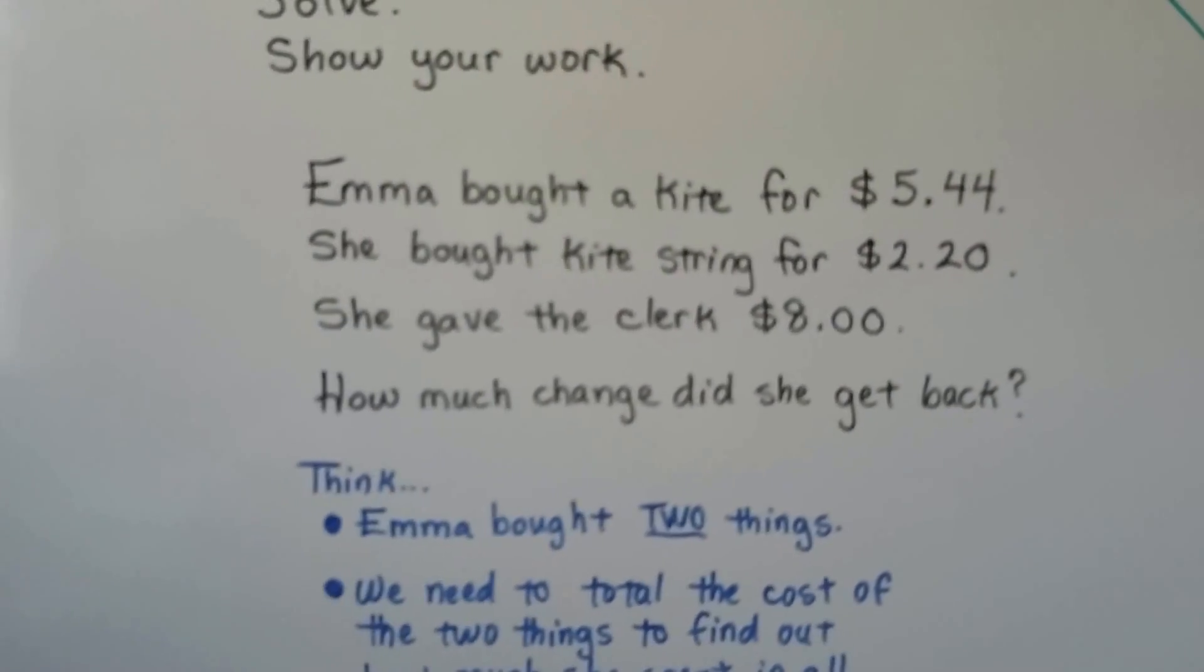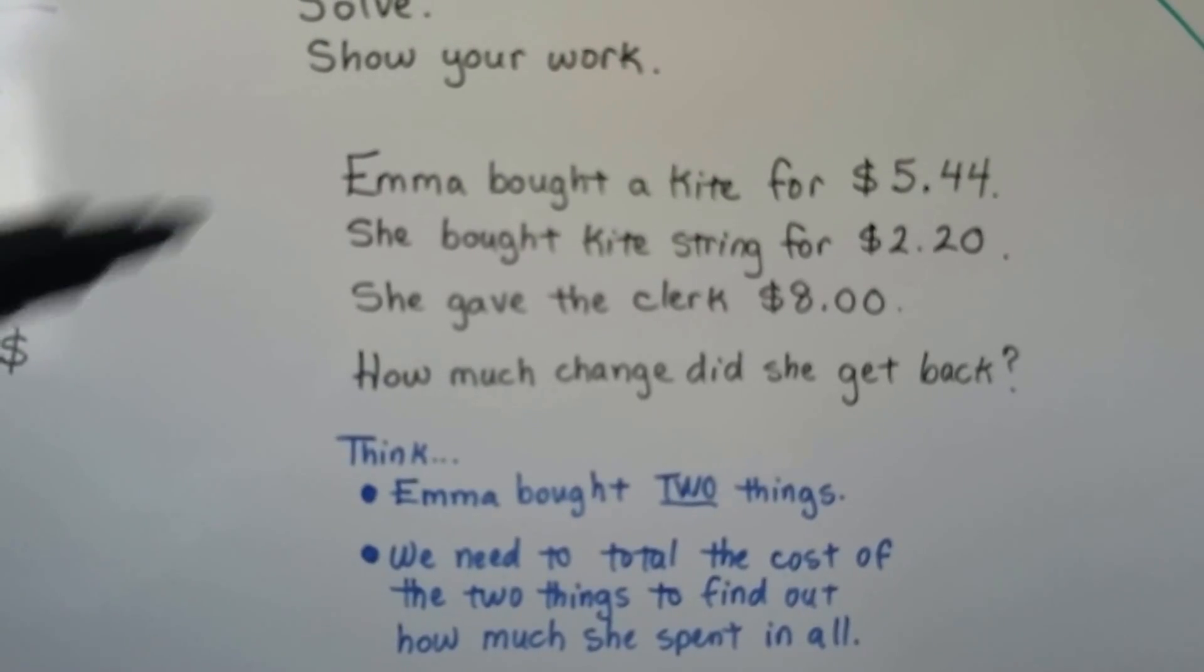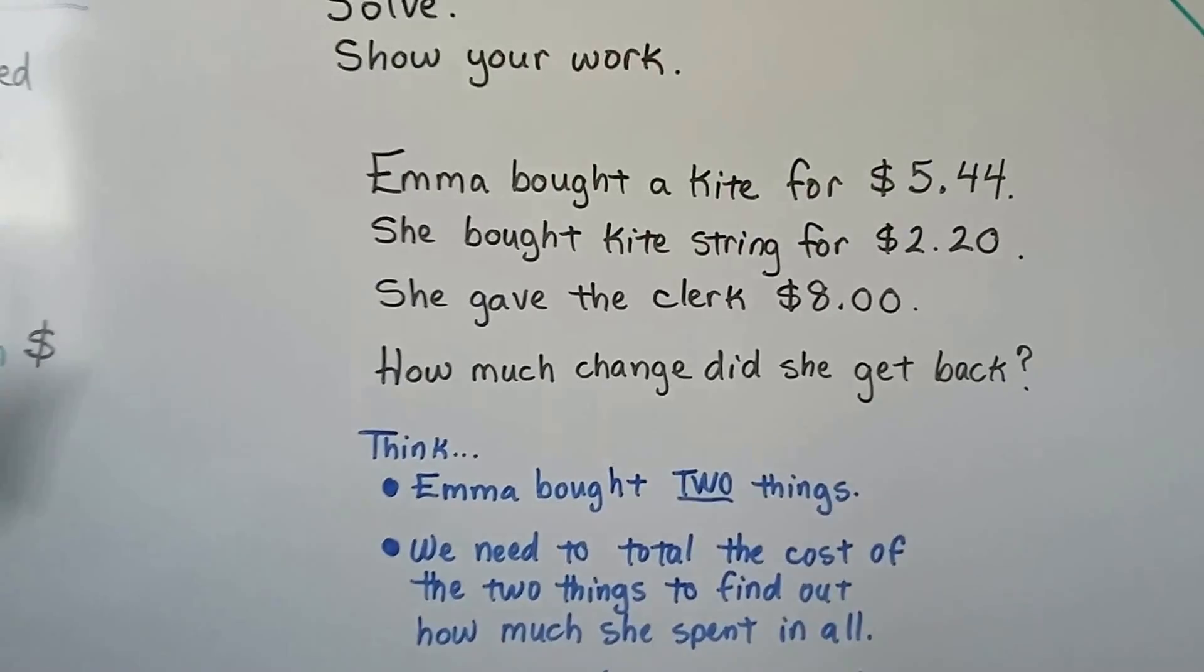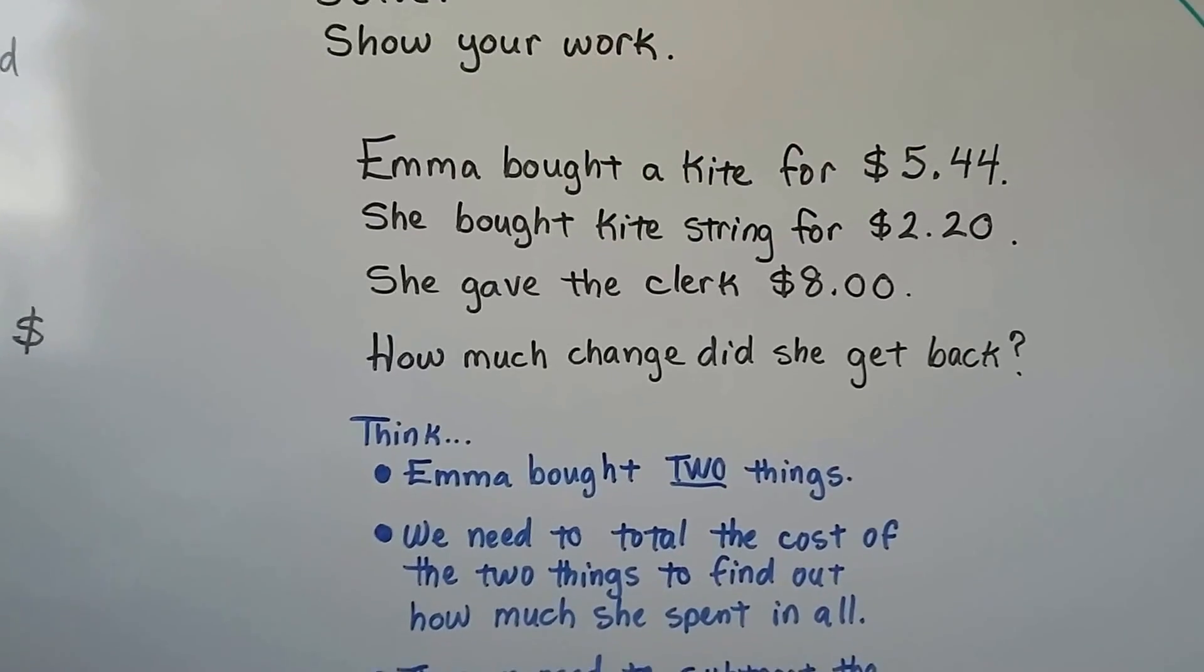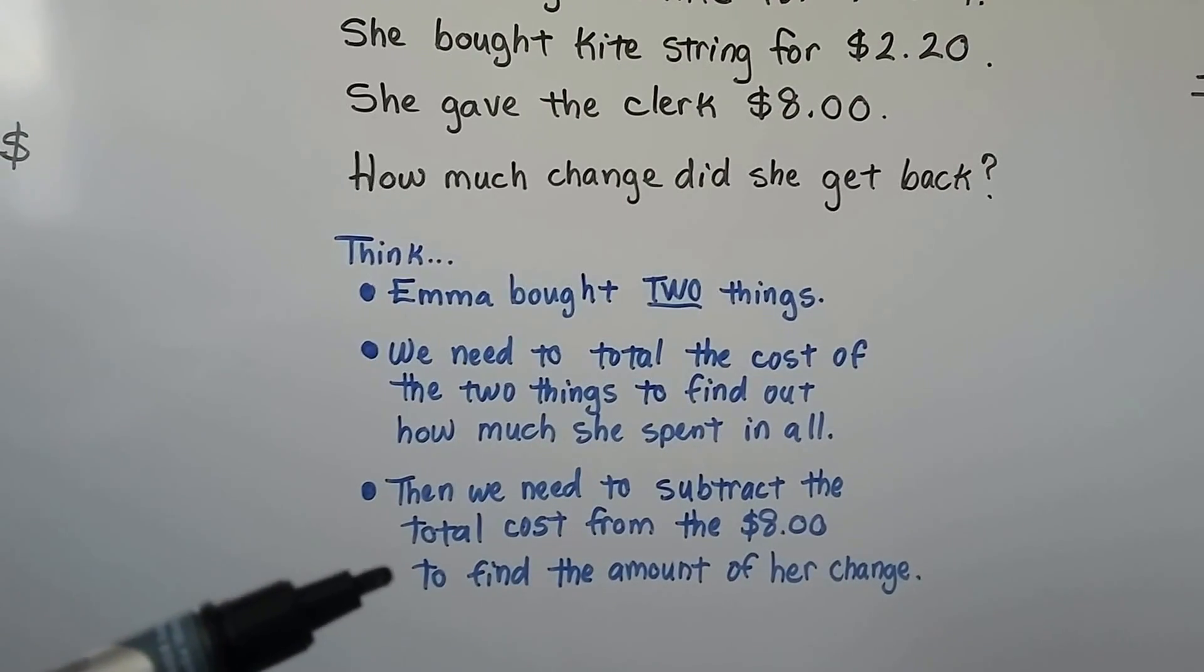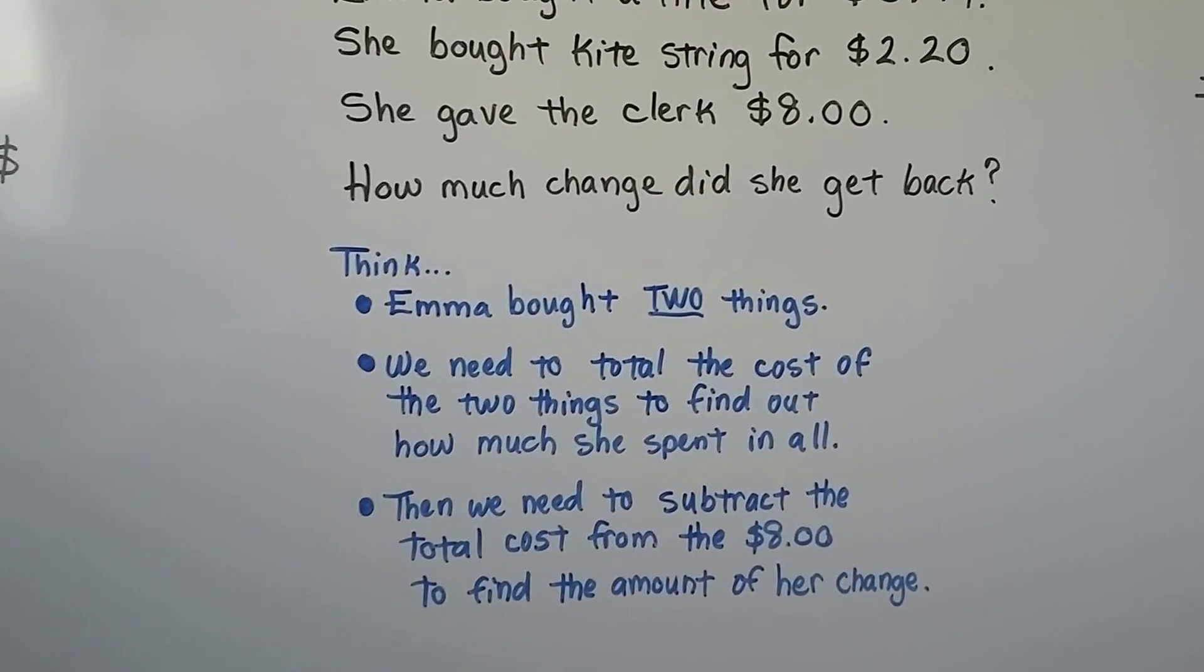So, we think. Emma bought two things - a kite and some kite string. We need to total the cost of these two things to find out how much she spent in all. Then we need to subtract the total cost from the $8 that she gave the clerk to find the amount of change she's going to get back.